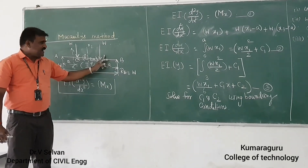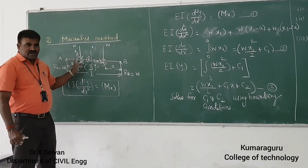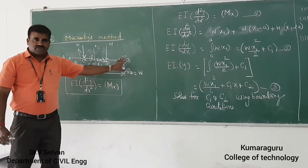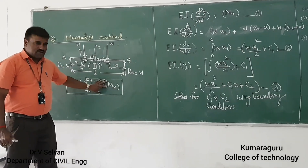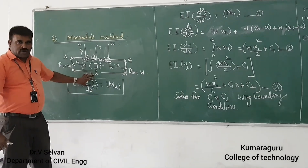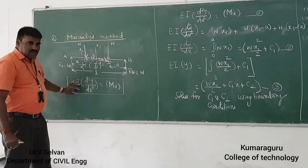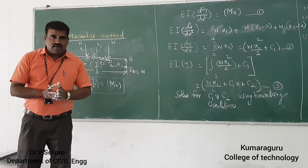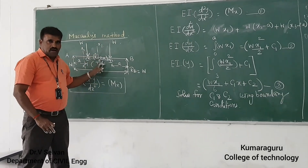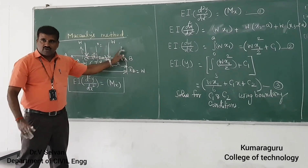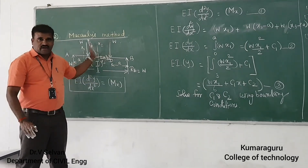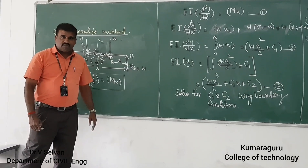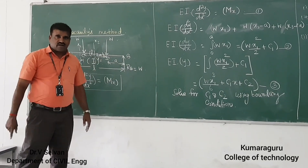So for that case, in the double integration method, we use the bending moment equation: EI d²y/dx² = Mx. In the case of double integration, if only one load is there or a full UDL throughout the beam, we can use it directly. But here there are two discontinuous loads, so I have to go for the extension — that is, Macaulay's method of deflection.